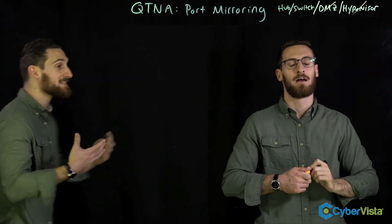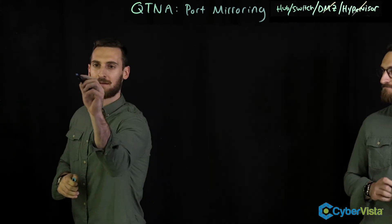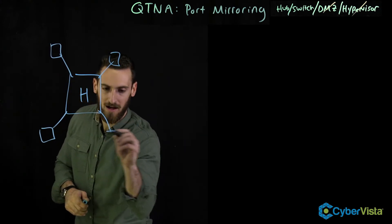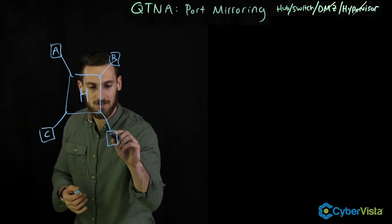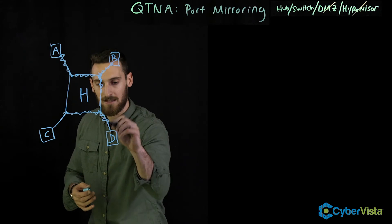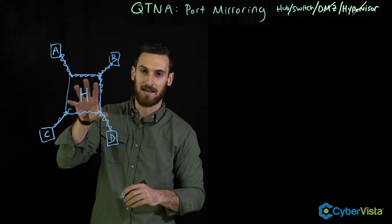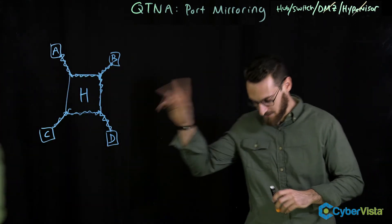A hub is basically a non-intelligent device used to connect hosts. The key thing to remember about a hub is: all data goes out all ports at all times. So if host A wants to communicate with host C, when the traffic goes through the hub, everybody connected gets it — host B, host D, and host C. It's almost like a mini broadcast zone.